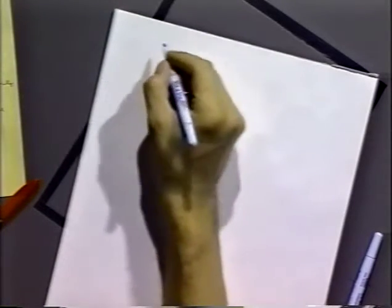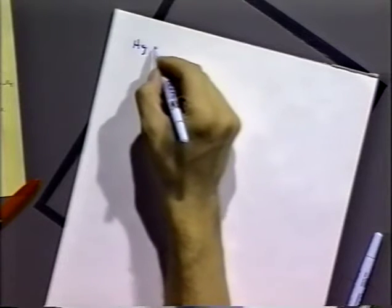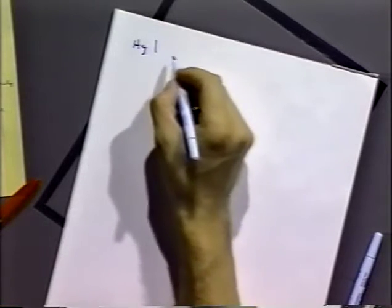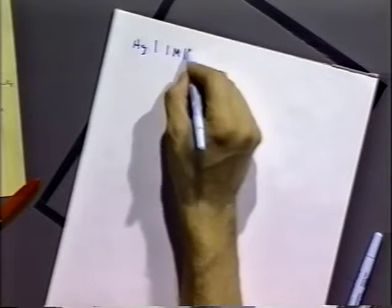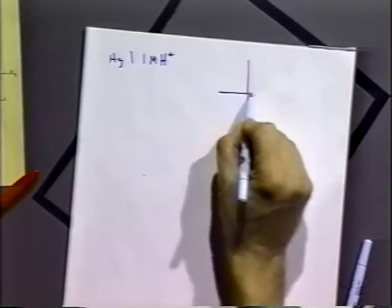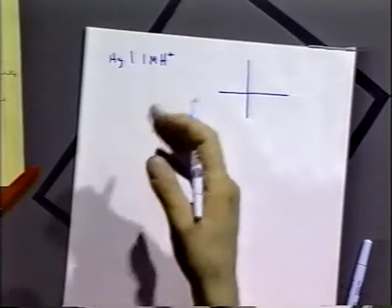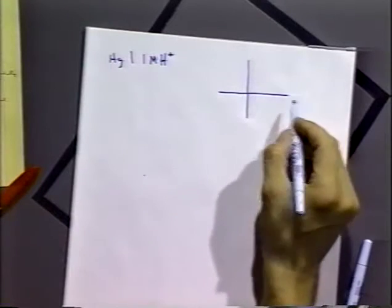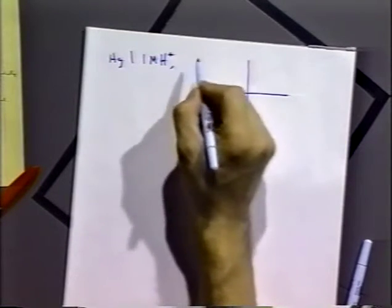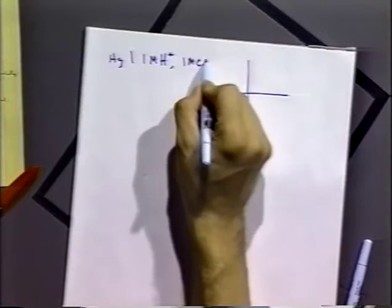Let's go back and reconsider our system from the day before. We had mercury in a one molar proton solution — a mercury electrode in a one molar solution with a reference electrode. Let's suppose it's one molar hydrogen ions and one molar chloride ions.